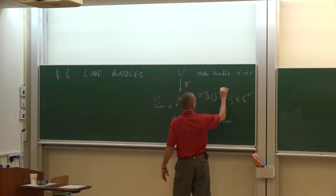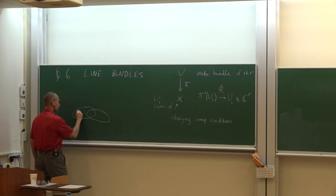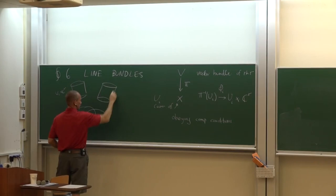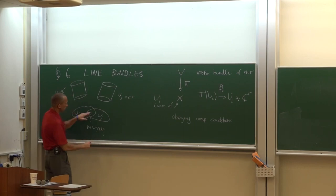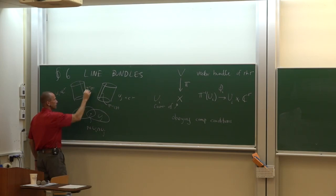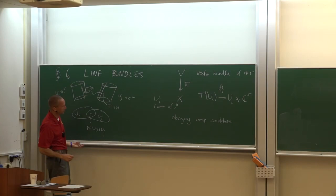The idea is that if we are on two local charts, the picture is: downstairs here's U_i, and above U_i we have a cylinder — this is U_i cross C^r — and here's U_j cross C^r. If I'm in the intersection, there's some point p in U_i intersect U_j. On one hand there's a fiber pi-inverse of p sitting in chart i; on the other hand pi-inverse of p sitting in chart j. If I pick some point in the fiber here, I want to know how to move over there — how do I translate between the fibers? So this is the idea, and in order to do that we define transition functions.